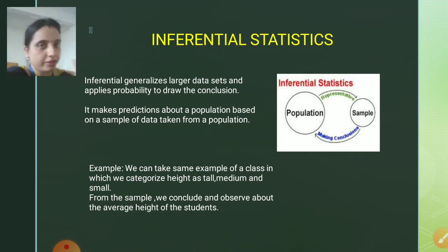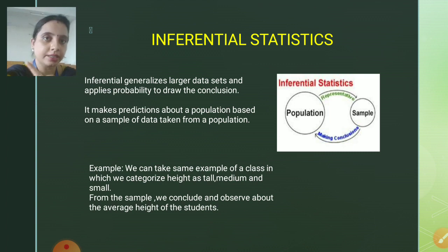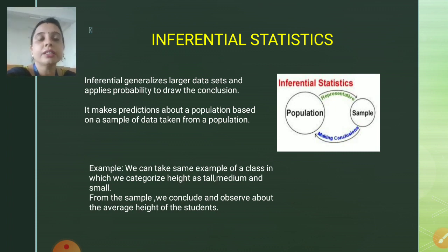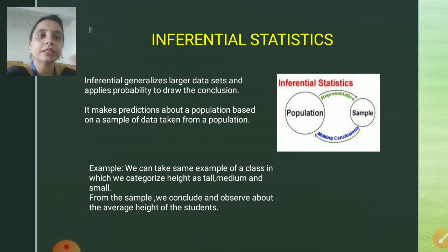In this case, 5.5 will be the average height of the class, but I am not going to measure the height of each and every person. The difference is: in case of descriptive statistics, we need to measure the height of each and every person in the class, we need to observe each and every data in a dataset. In case of inferential statistics, we don't need to take each and every data — we just overview the data and conclude that 5.9 is the maximum height and 5.1 is the minimum height.